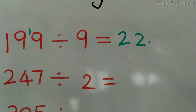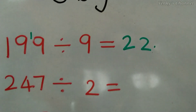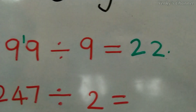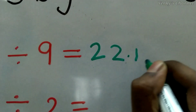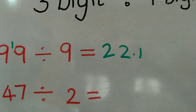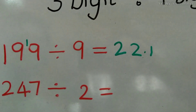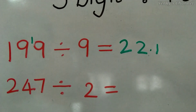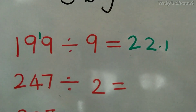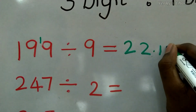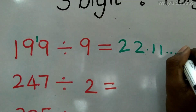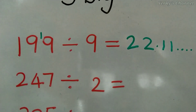We have a remainder of 1, so if we keep a 0 beside it, it becomes 10. 9 × 1 = 9, which is closest to 10, so 10 − 9 = 1 and we have a remainder of 1 again. It becomes 10 again, and 9 × 1 = 9, so it keeps on going because we'll always have remainder 1.